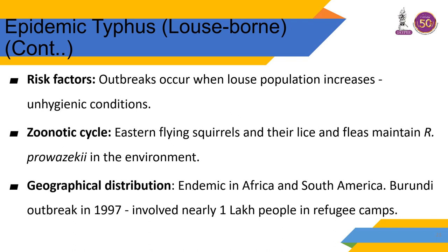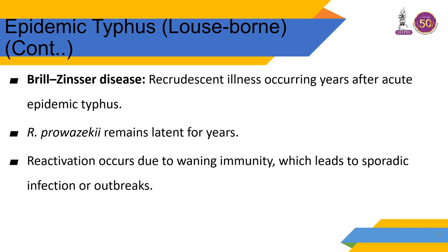Risk factor outbreaks occur when louse populations increase due to unhygienic and crowded conditions. Eastern flying squirrels and their lice and fleas maintain R. prowazekii in the environment as reservoirs. Epidemic typhus is endemic in Africa and South America — a Burundi outbreak in 1997 involved nearly 100,000 people in refugee camps. Brill-Zinsser disease is a recrudescence occurring years after the acute episode, when R. prowazekii remains latent and reactivation is likely due to waning immunity.